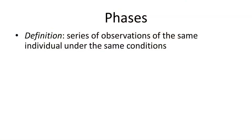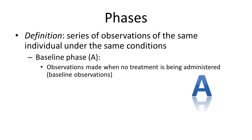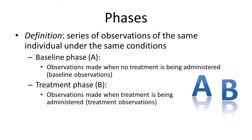Let's go back and be more descriptive about some important key terms, like the term phases. A phase refers to a series of observations of the same individual under the same conditions. We typically use the letter A for the baseline — the control condition, the no-treatment condition — and the letter B for the treatment condition, when we're manipulating the participant. So an ABA design means baseline, followed by treatment, then back to baseline.